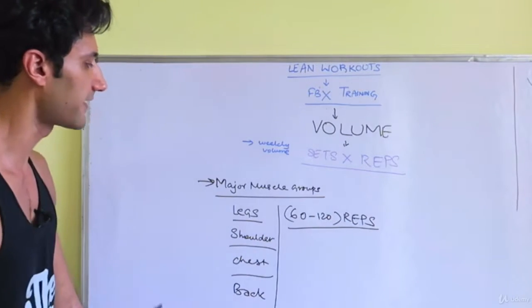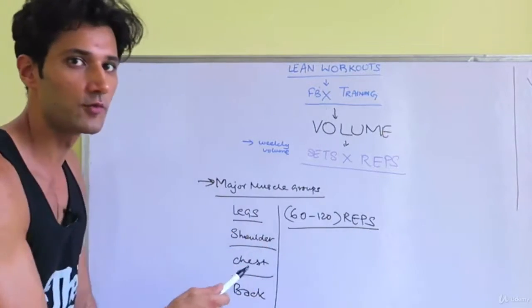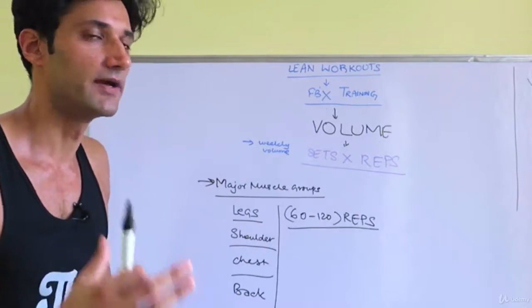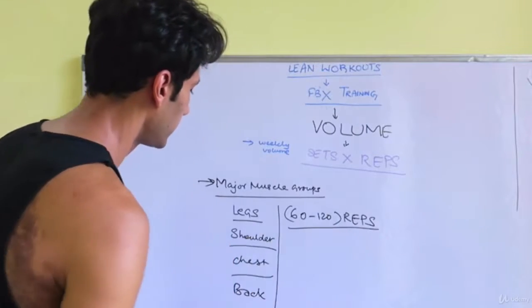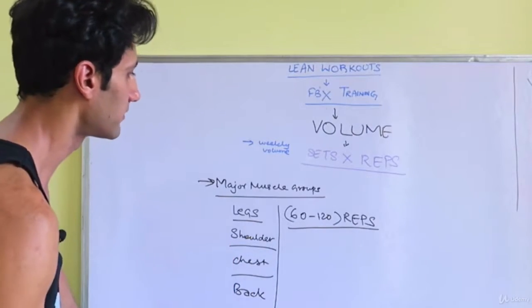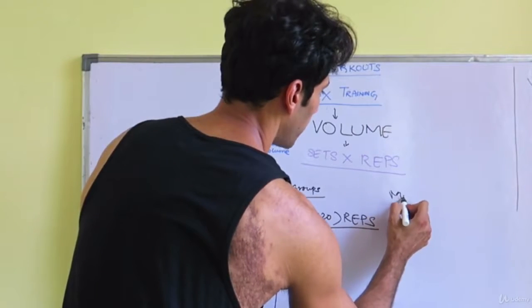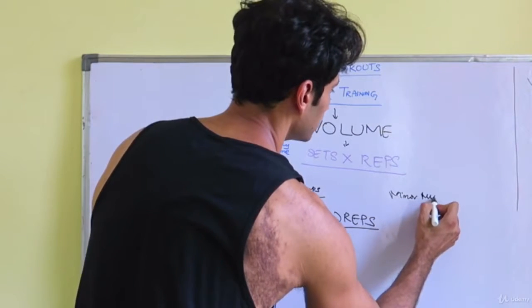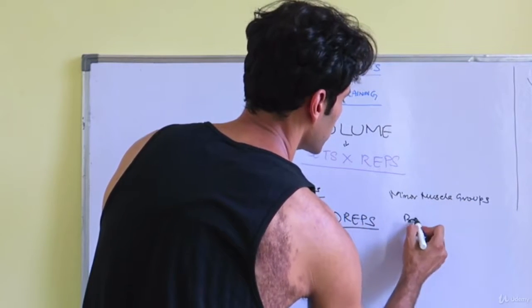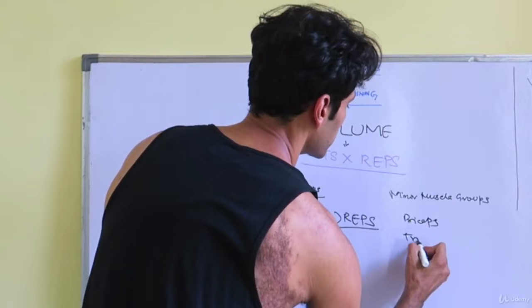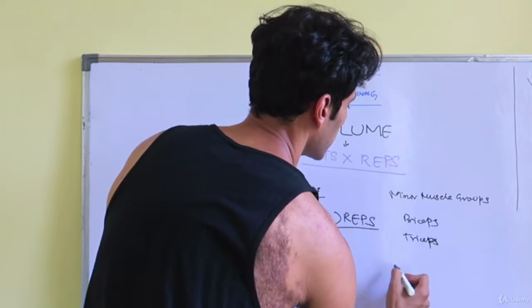60 to 120 repetitions. What about the minor muscle groups? The minor muscle groups, you've guessed it right: biceps, triceps, and calves.